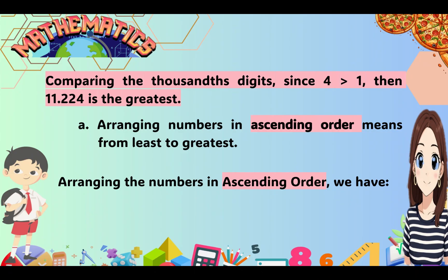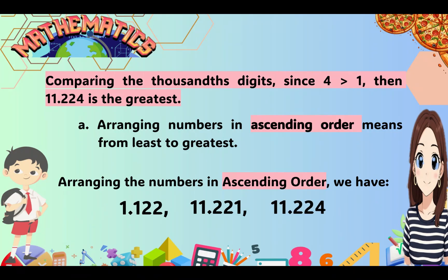Arranging numbers in ascending order means from least to greatest. So arranging these numbers in ascending order: 1 and 122 thousandths is the least, next is 11 and 221 thousandths, and 11 and 224 thousandths is the greatest.